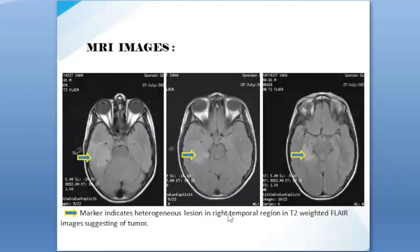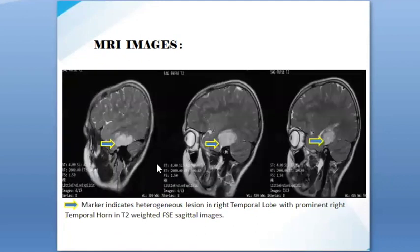The T2-weighted FLAIR images also indicate the tumor, showing a hyperintense or heterogeneous hyperintense area in the temporal lobe, consistent with tumor. Here in the sagittal plane, the T2-weighted sagittal images also allow us to locate the tumor.